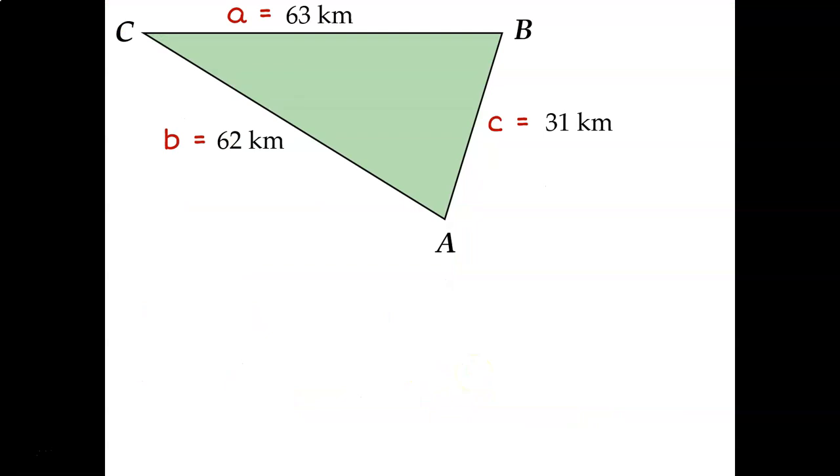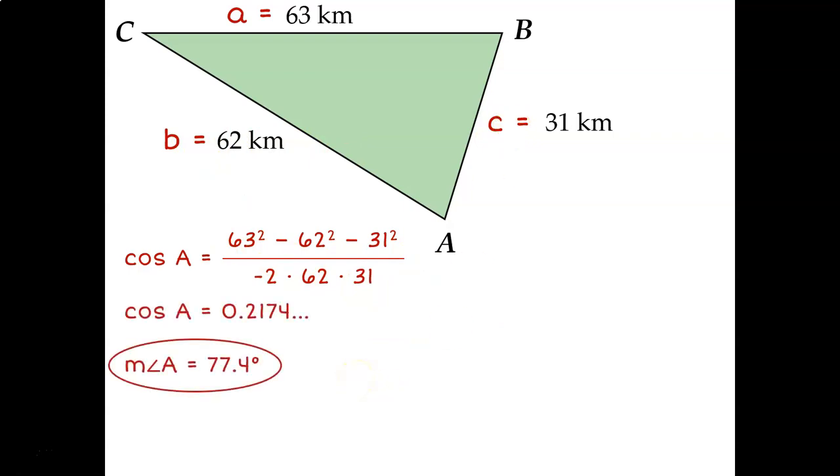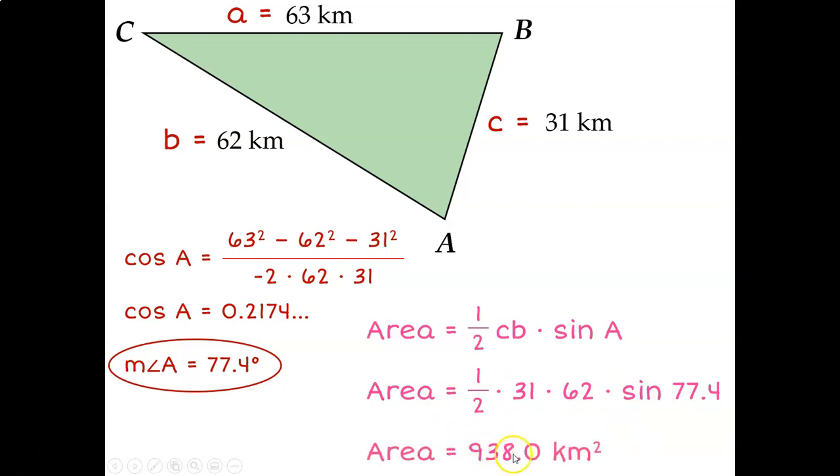Remember that there's two versions of the law of cosines, depending on which type of measurement you're looking for. In this case, we're looking for an angle measure. So we're going to use the formula that starts with cosine of A. So cosine of A equals little a squared minus little b squared minus little c squared over negative 2 times little b times little c. Type that in the calculator, take the inverse cosine of both sides, and we find out that the measure of angle A is 77.4 degrees. Now I have everything I need to fill in my area formula. The area is equal to one-half times little c times little b times the sine of big A. Type all of that into the calculator, and we end up with a final answer of approximately 938 square kilometers.